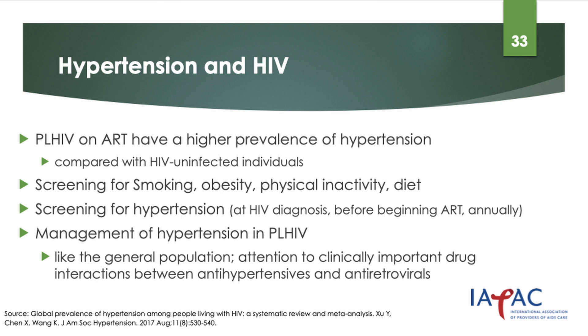People with HIV on antiretroviral therapy have a higher prevalence of hypertension compared to HIV-uninfected individuals. All people living with HIV should be screened for other risk factors for hypertension, such as tobacco smoking, obesity, physical inactivity, and unhealthy diet. People with any risk factor identified should be advised to modify their lifestyle. Screening for hypertension should form part of the regular assessment of all people living with HIV in care, with blood pressure measurement at HIV diagnosis, at the beginning of antiretroviral therapy, and at least every year after that. The clinical management of hypertension in people with HIV is similar to the general population, with particular attention paid to drug interactions between antihypertensives and antiretrovirals.